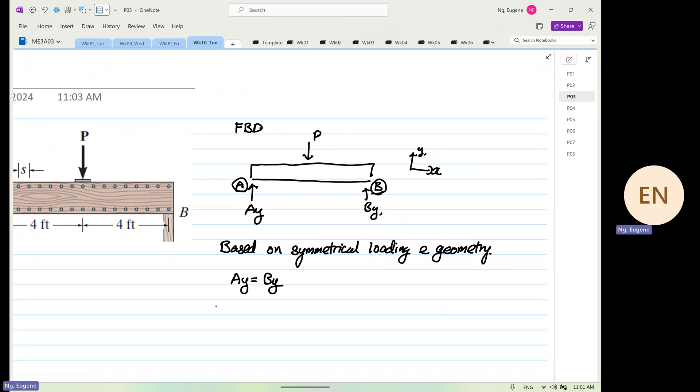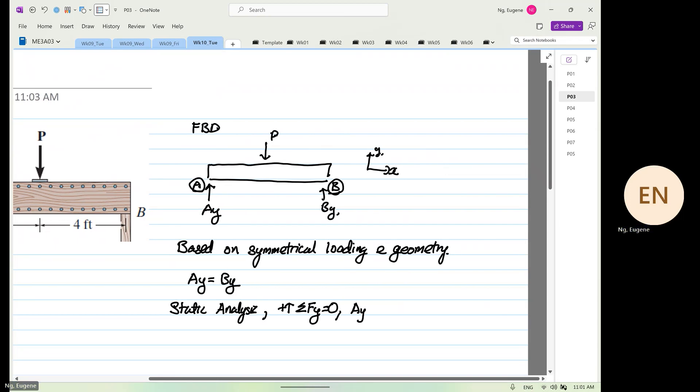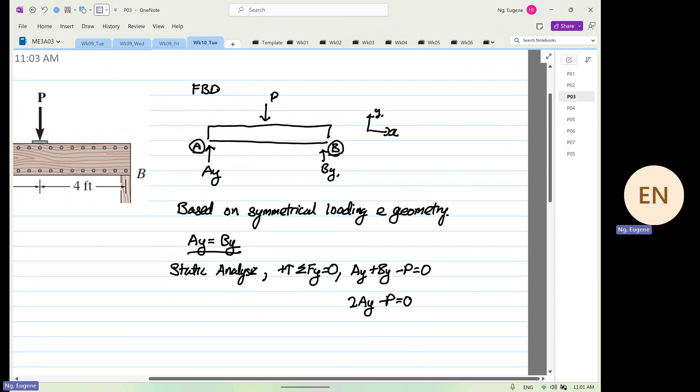So when we carry out static analysis, positive is going up, summation of forces in the y-direction is equal to zero. We know that Ay plus By minus P is equal to zero. Because of the fact that Ay is equal to By, you have 2Ay minus P is equal to zero. Ay is equal to P over 2, and this is also equal to By.